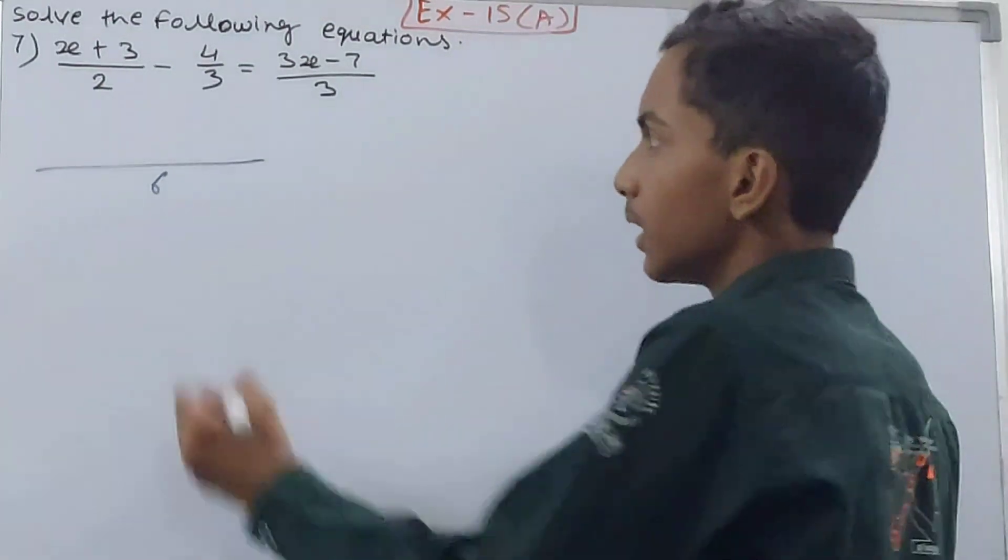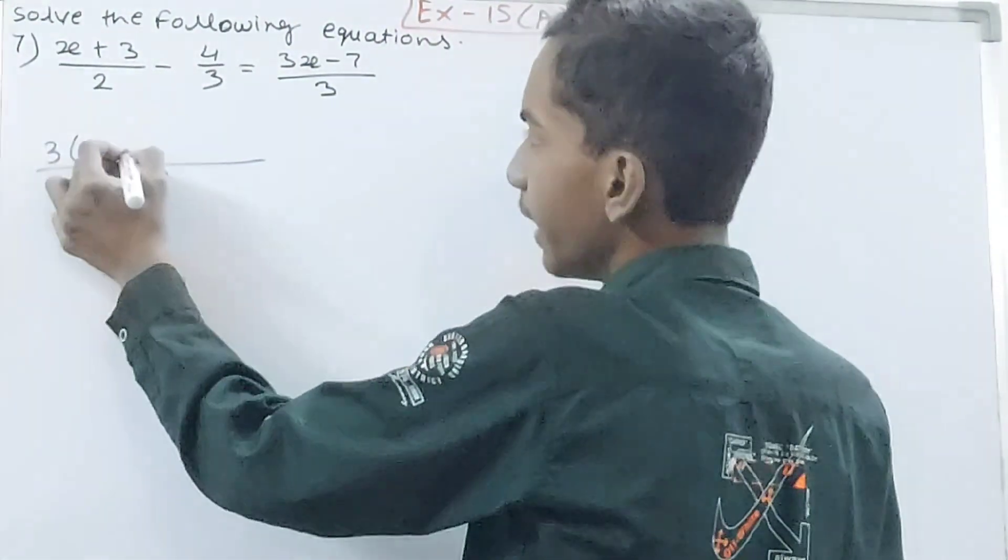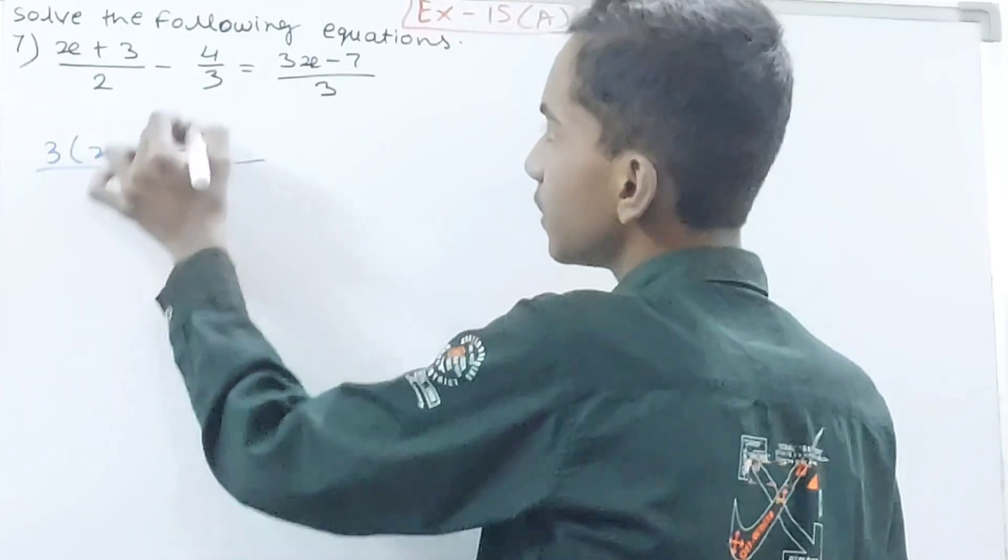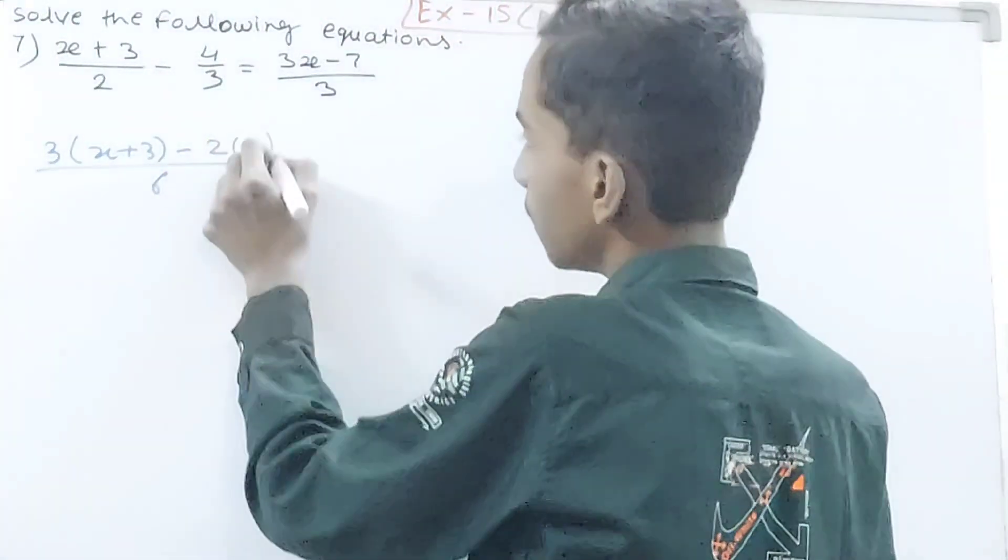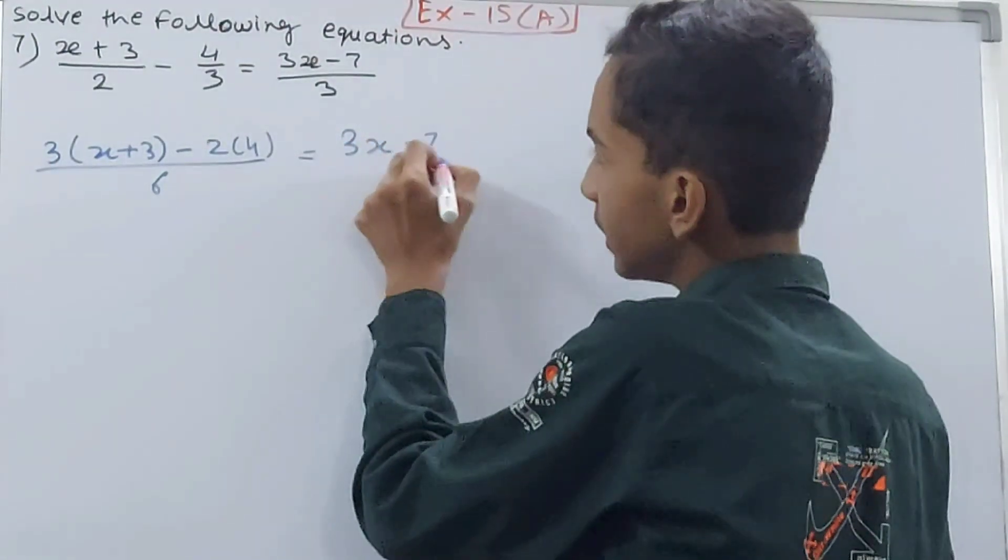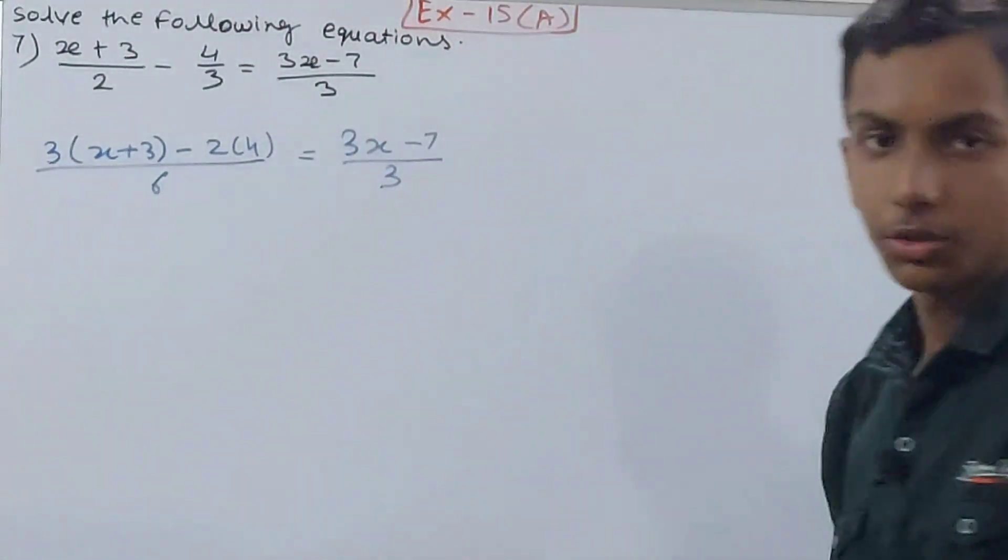So we're going to have 3(x+3), and 3 into 2 is 6, so minus 2 into 4. This side will be as it is on the right hand side, I'm making no change.